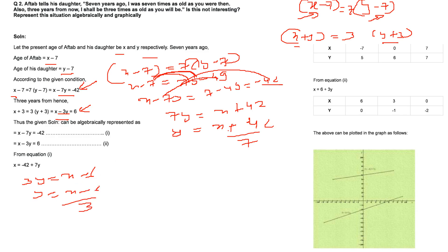For Y = (X + 42)/7: put X = 0, Y = 42/7 = 6 — giving point (0, 6). Put X = −7: Y = (−7 + 42)/7 = 35/7 = 5 — giving point (−7, 5). These are the two points for the first equation. Now for Y = (X − 6)/3: put X = 0, Y = −6/3 = −2 — giving point (0, −2). Put X = 6, Y = 0 — giving point (6, 0).